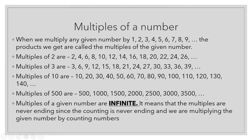We find the multiples of 500 by putting two zeros at the back of all the multiples of 5. Multiples of a given number are infinite — infinite means endless. They can go on and on and on because counting never ends, and we are multiplying the given number by counting numbers. I hope you have understood what multiples of a number are.